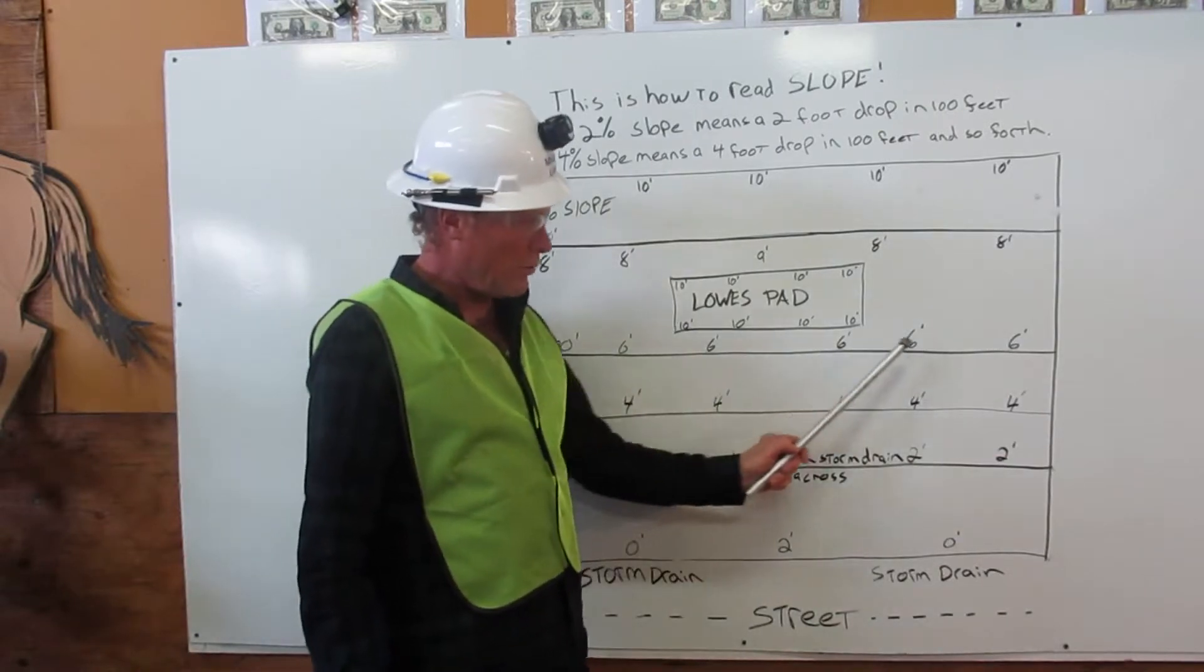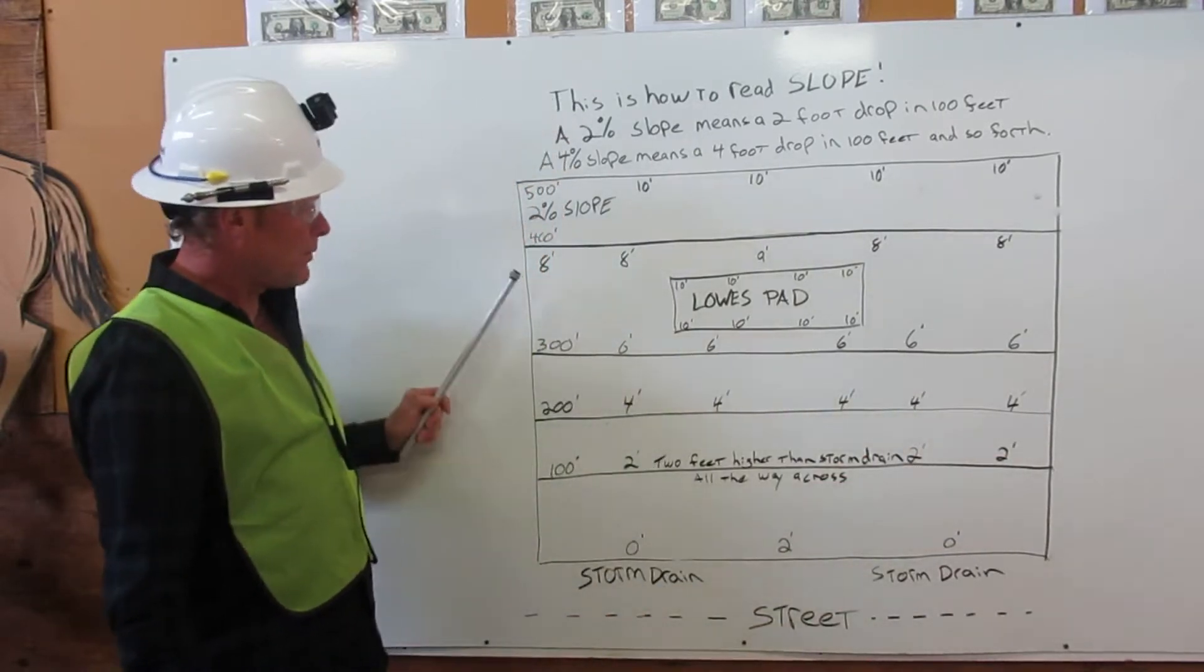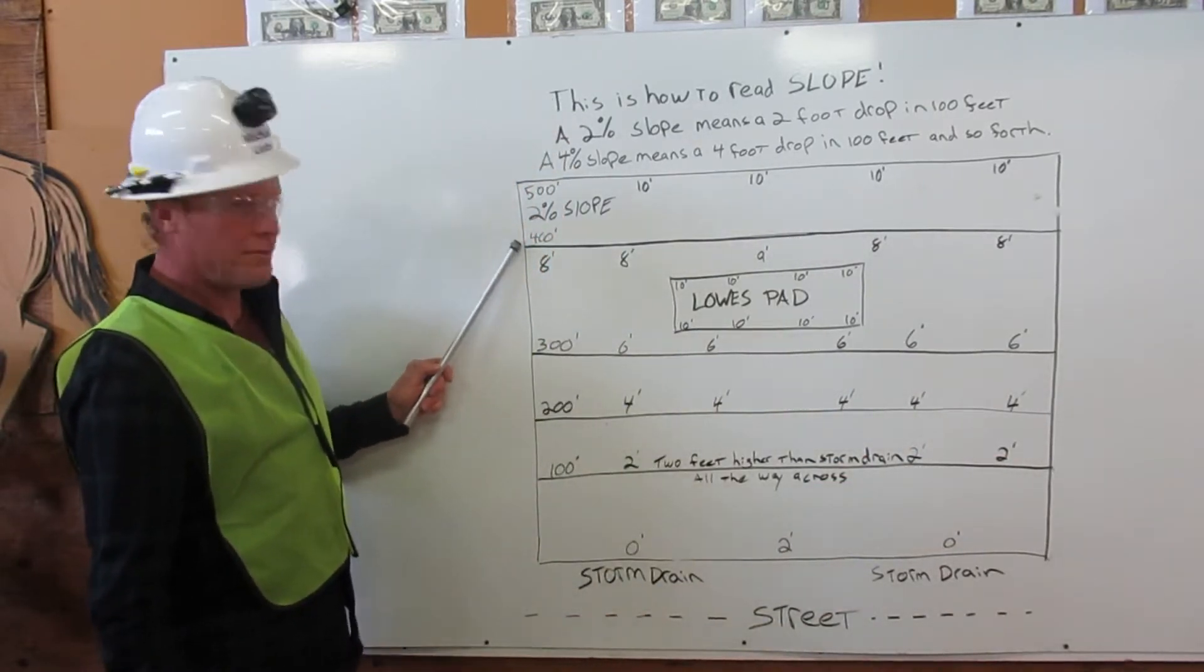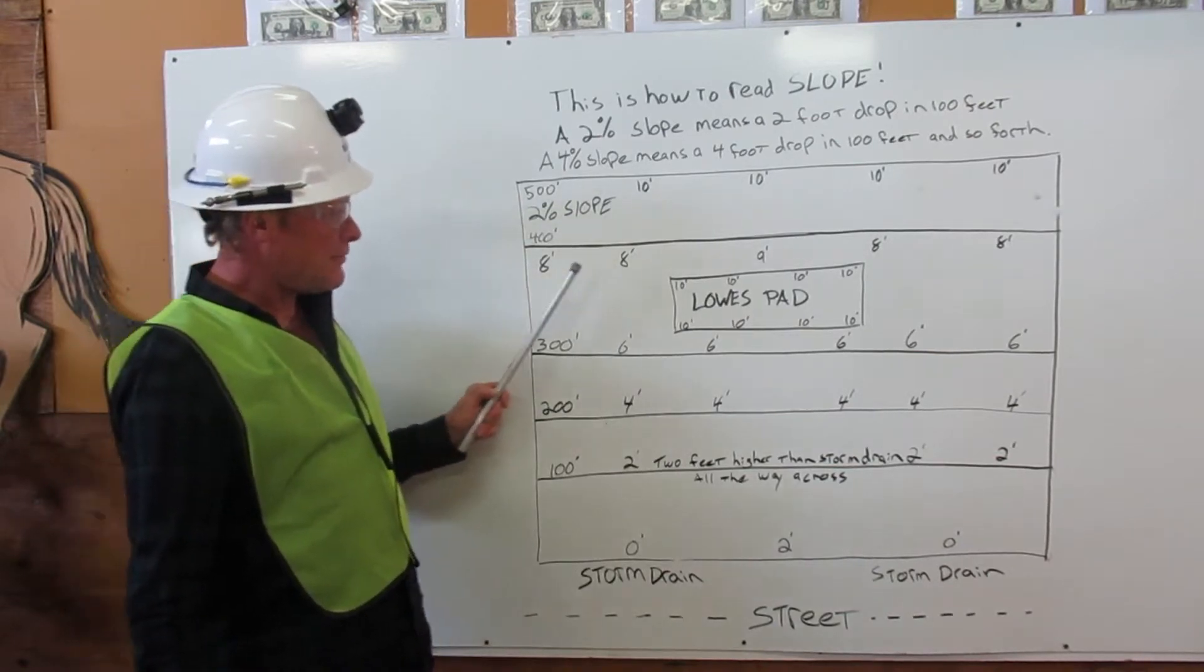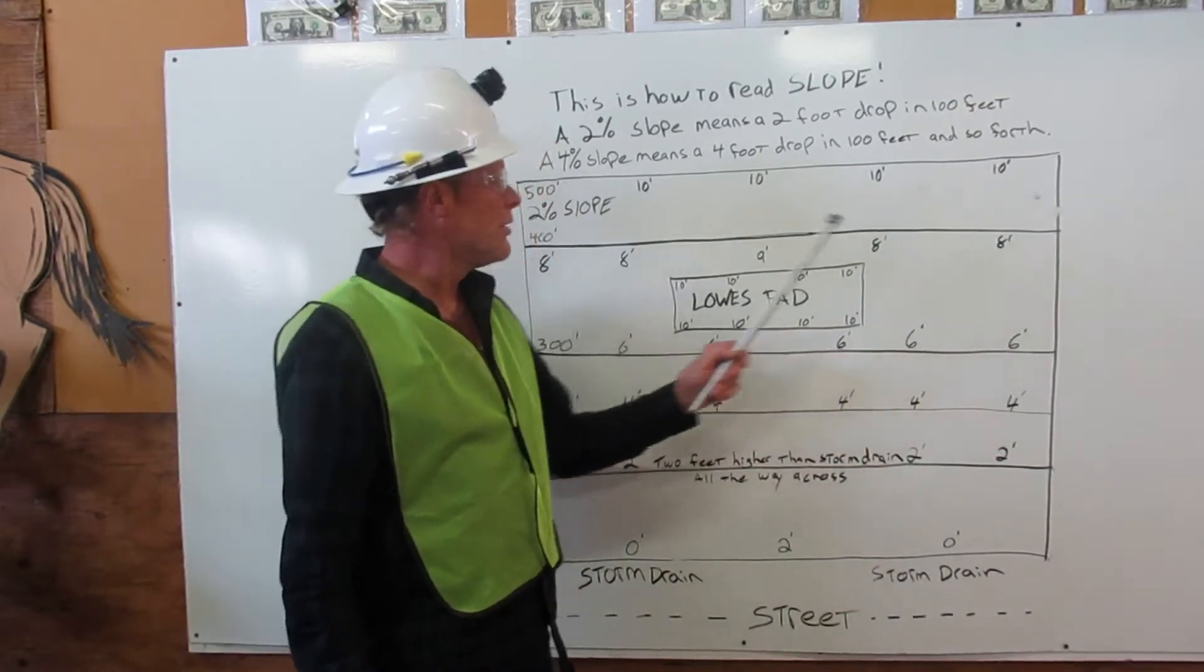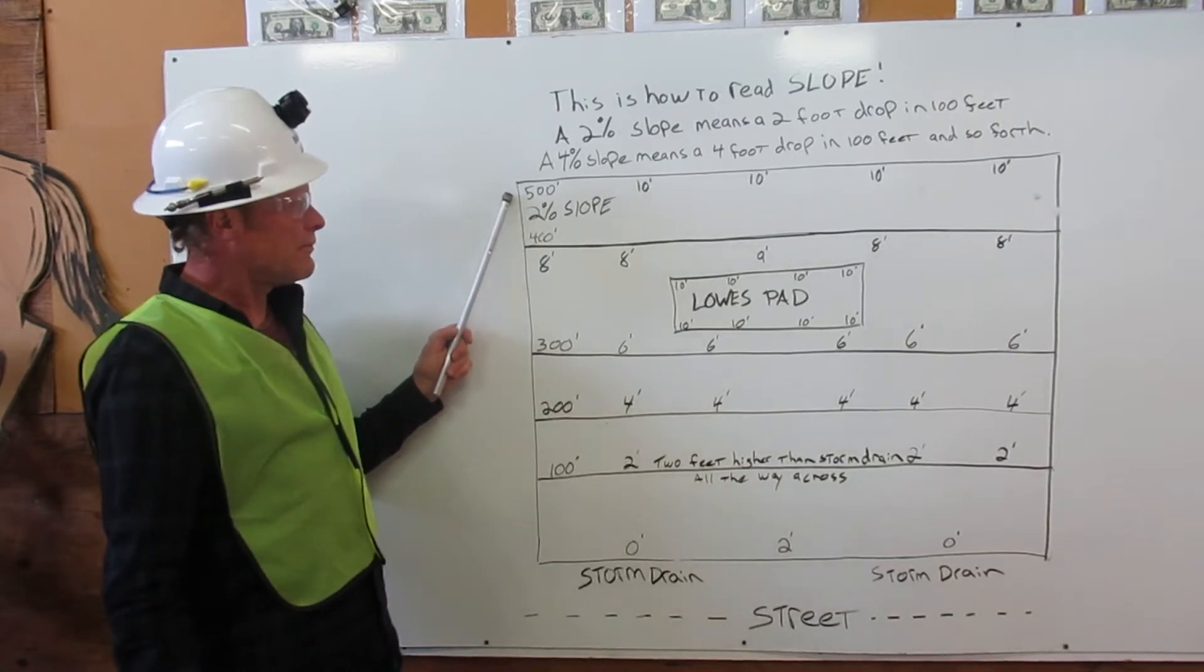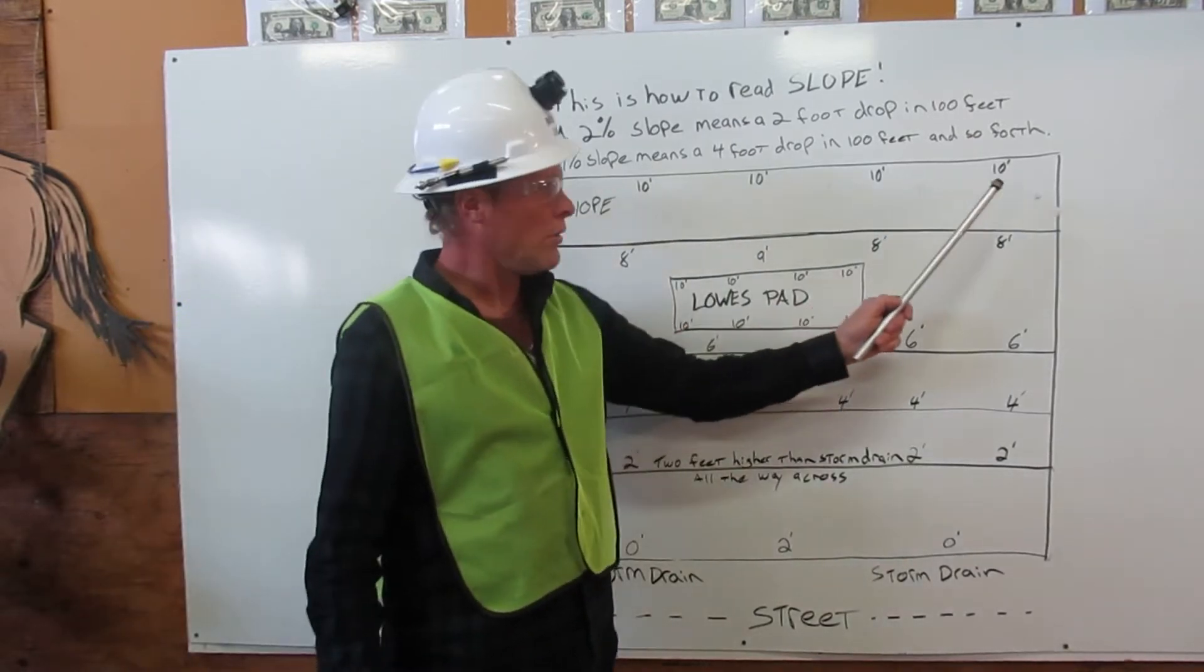At 400 feet, it's eight feet higher all the way across, and at 500 feet, it's ten feet higher all the way across.